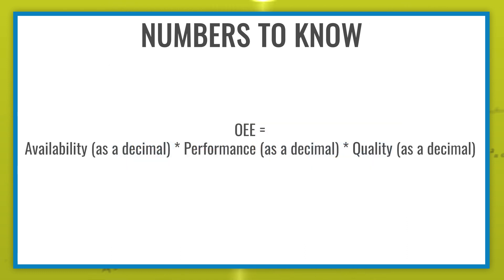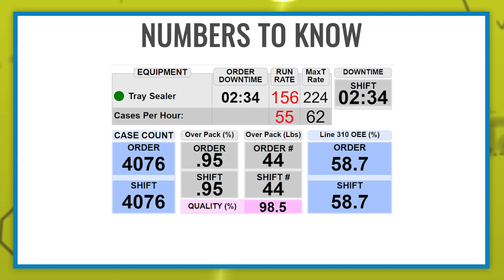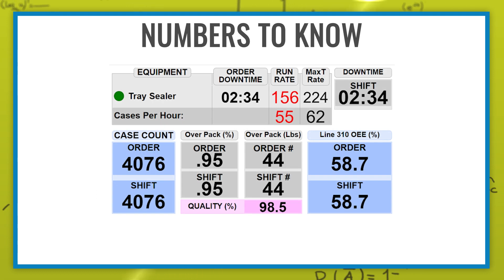OEE equals availability times performance times quality. Using the digital screen, what is the projected OEE for the production order?